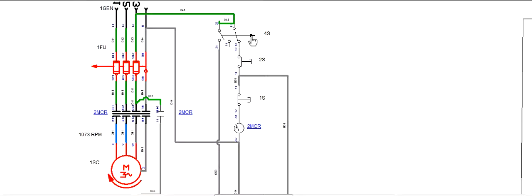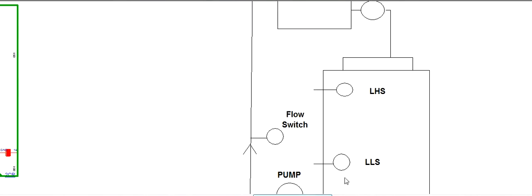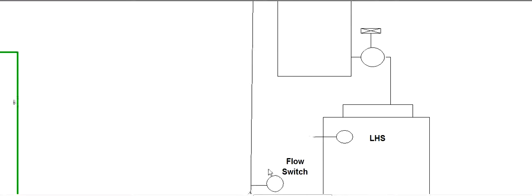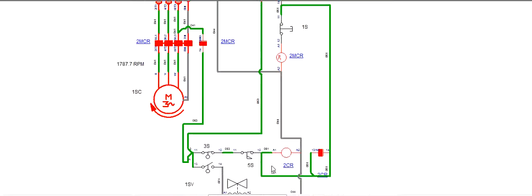I stop the motor and now I want to put it on auto mode. Switch to auto mode — it is now on auto mode, you can see. Power is going through to the low level switch. The water is low, so the low level switch activates and now the pump is running, pumping water to the top tank. You can see the flow switch is OK — there is a flow.